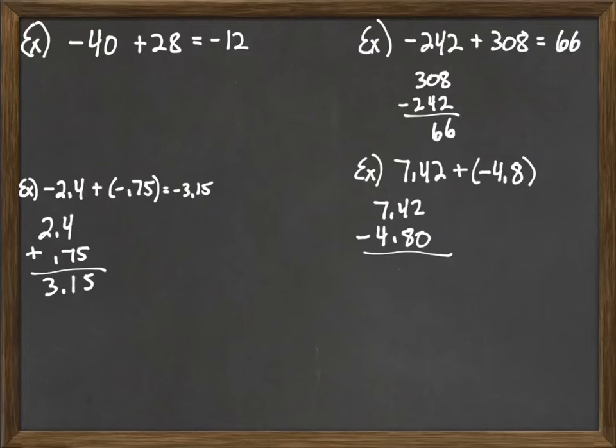So for the 4, we're going to have to borrow from 7. The 7 will turn into a 6. The 4 will turn into a 14. 14 minus 8 is 6. And then 6 minus 4 is 2. So we get 2.62. And since the positive number was bigger, the answer will be a positive 2.62.